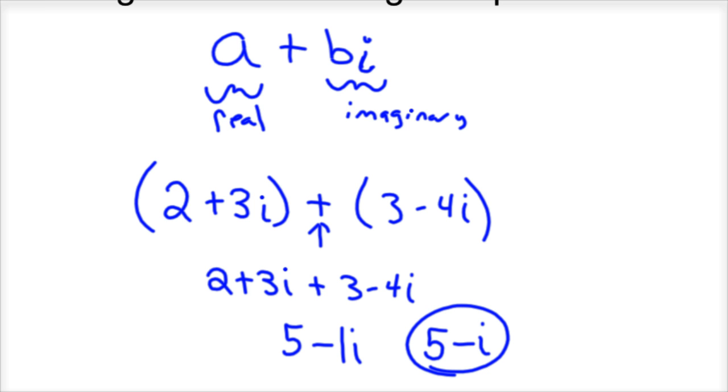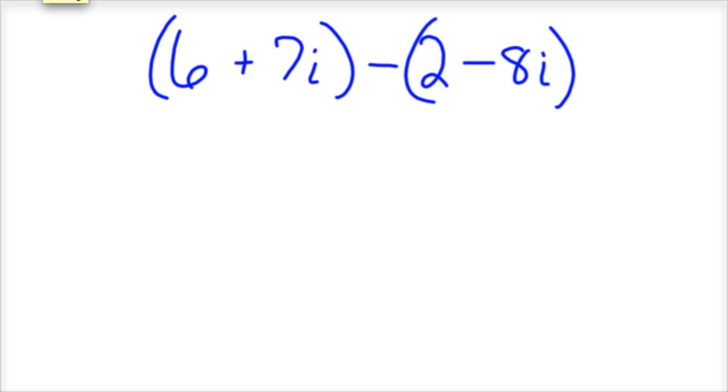And I mean, that's it. And if you subtract them, so if we had 6 plus 7i minus, whoops, put the parentheses in the wrong spot, minus (2 minus 8i), all right? This is just like subtracting anything. You could take 6 minus 2, the real part, and add that to the imaginary part, which is 7i minus a negative 8i.